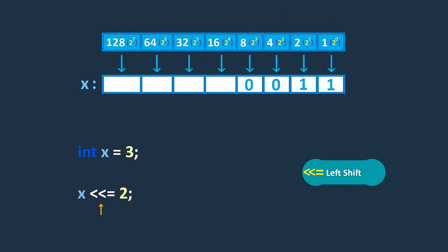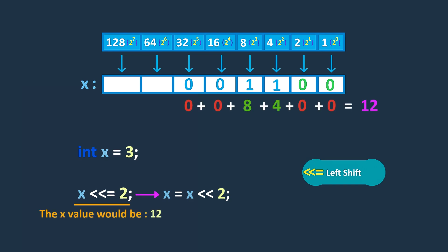The left-shift assignment operator shifts the bits of the variable on the left-hand side to the left by the number of positions specified by the value on the right-hand side and assigns the result to the variable. For example, x <<= 2 is a shorthand notation of x = x << 2. So the value of x would be 12.